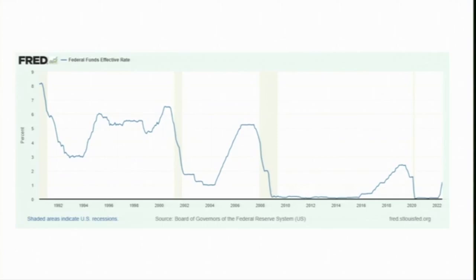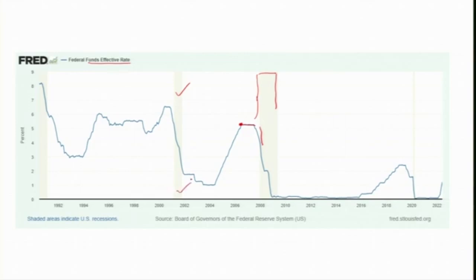Looking at the diagram showing the movement of the effective Fed fund rate: before the 2007 crisis, when the economy was at its peak, the rate was very high. Then as the crisis started, the Fed reduced its target accordingly, and the effective rate also declined. The grey bars represent recession periods. The effective Fed fund rate became almost near zero after the 2008 financial crisis.